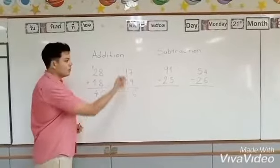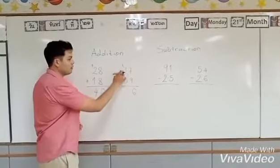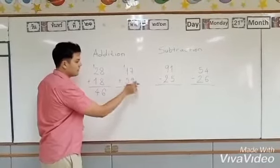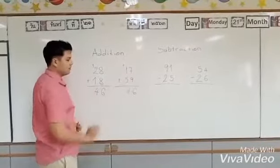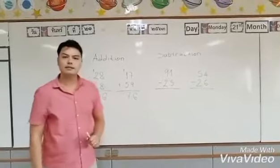I'm going to write 6, and 1 I'm going to remember. 1 plus 1 plus 5 equals 7. So 17 plus 59 equals 76.